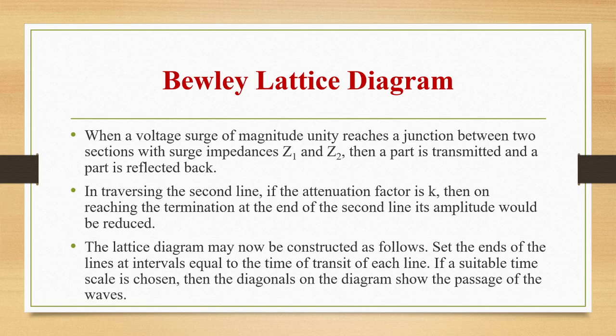The lattice diagram may be constructed as follows: set the ends of the lines at intervals equal to the time of transit of each line. If a suitable time scale is chosen, the diagonals on the diagram will show the passage of the waves. We consider surge impedances Z1 and Z2. Whenever a voltage surge of magnitude unity reaches a junction between two sections with surge impedances Z1 and Z2, a part will be transmitted and part reflected back.